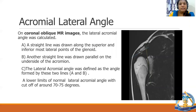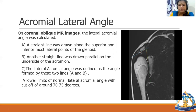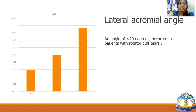The lateral acromial angle was calculated on coronal oblique MR image. It is measured by drawing a line along the superior and inferior most lateral part of the glenoid and another line parallel to the underside of the acromion; the angle formed by these two lines is the lateral acromial angle. The lower limit of normal is a cutoff of around 70 to 75 degrees, and an angle of less than 70 degrees occurred in patients with rotator cuff tears.